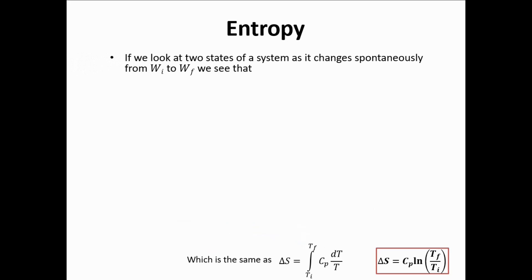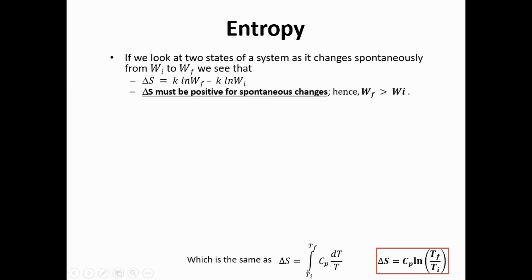Looking more into entropy: if we consider two states of a system as it changes spontaneously from Wi to Wf, the entropy change equals k·ln(Wf) minus k·ln(Wi). The entropy change must be positive for a spontaneous process — that is, the system must be moving from a state of order to a state of disorder, becoming increasingly disorderly. The final state must be more probable than the initial state.